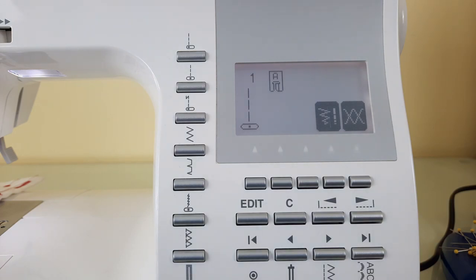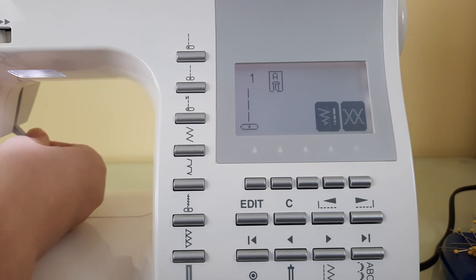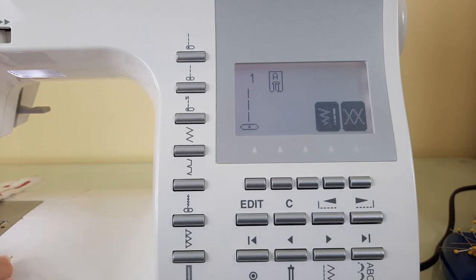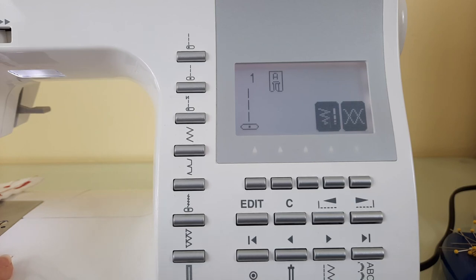Now one of the most common issues is not making sure that your presser foot is lifted when you go to thread your sewing machine. Always make sure that your presser foot is lifted because it opens the tension discs that are inside your sewing machine and it allows the thread to pass through and it allows the sensor to sense the thread.